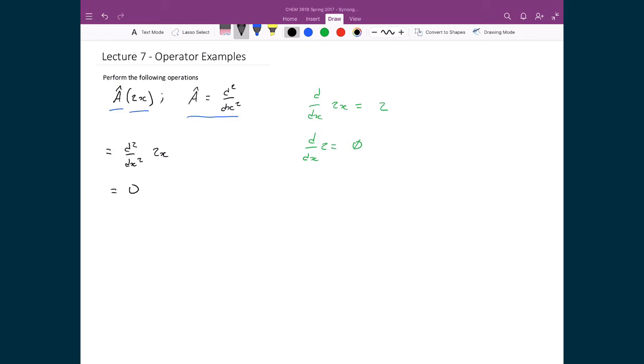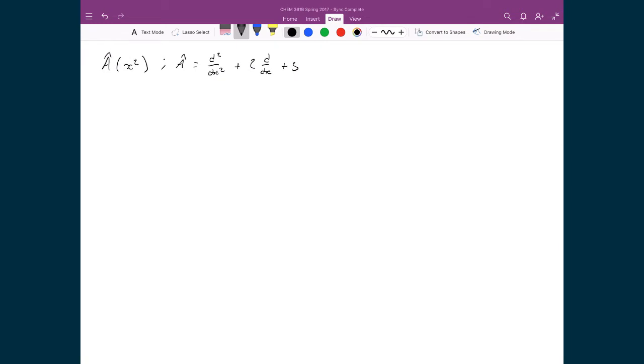Let's now look at the second example. The second example looks a little bit more complicated in terms of how a hat is defined, but it's still basically the exact same setup. So I have a hat and I'm applying it to x squared. And so if I substitute in for a hat, what I get is d squared by dx squared plus 2d by dx plus 3, and all that is going to be multiplied by x squared. And in this case, I just use the distributive principle where I take my x squared and I apply it to the right-hand side of all of these terms.